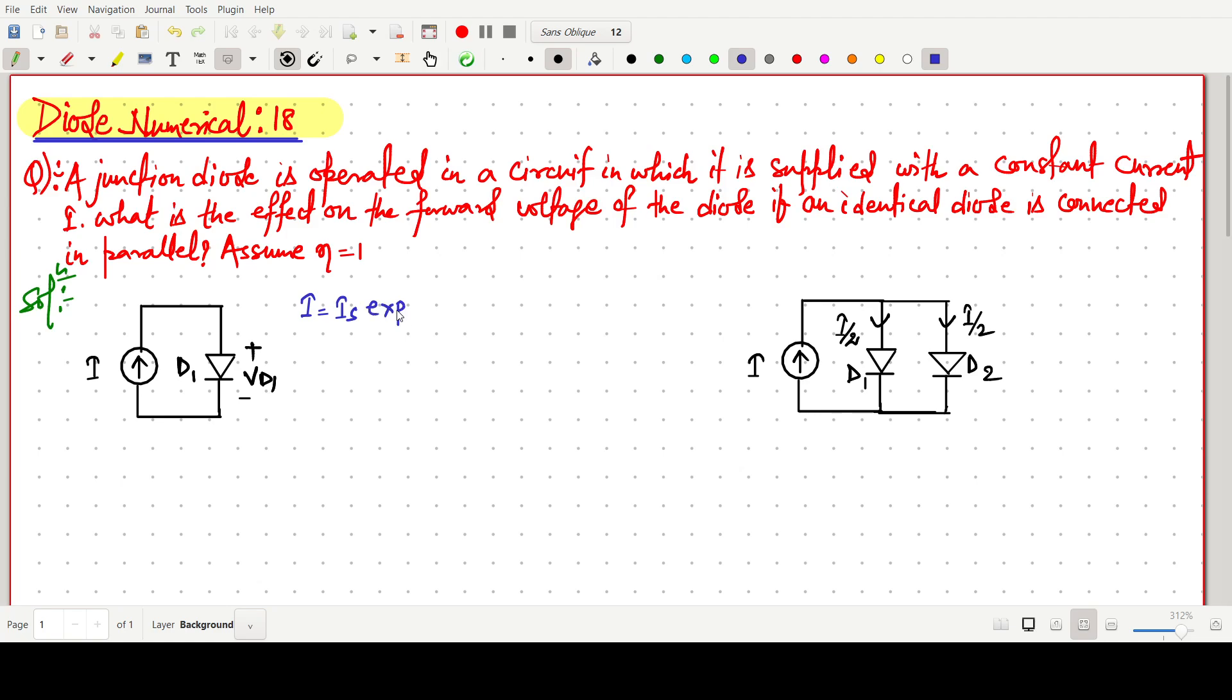So what should be the effect in the forward voltage? First of all, we will start with the diode equation. The expression I can be written as Is exp VD1 by eta VT. The eta ideality factor is already 1, so this can be written as Is exp VD1 by VT.